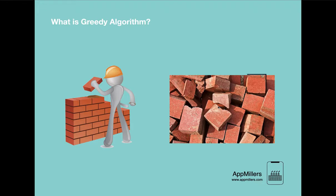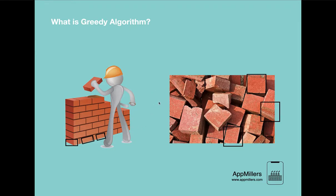For example, this brick looks good, so we put it in the first layer of our wall. Then we look for the second best brick and place it next. We continue selecting the third best brick and placing it as well. We put the best bricks in the first layer, then other bricks in the second and third layers, because we want to make our wall stronger. In each step, we select the best brick available at that time.